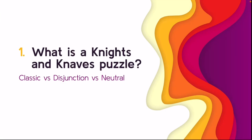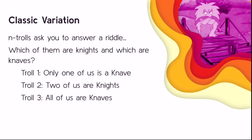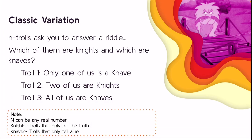The first question you may be asking is: what is a Knights and Knaves puzzle? Dr. Shelton and I worked on the classic, disjunction, and neutral versions of this puzzle. The classic variation is a puzzle with n trolls asking you to answer a riddle — you have to determine which of them are knights and which are knaves. Knights are trolls that only tell the truth, whereas knaves are trolls that only tell a lie. n can be any number.